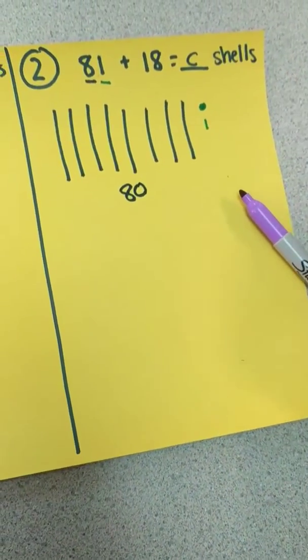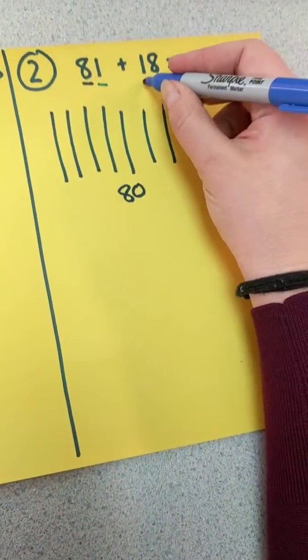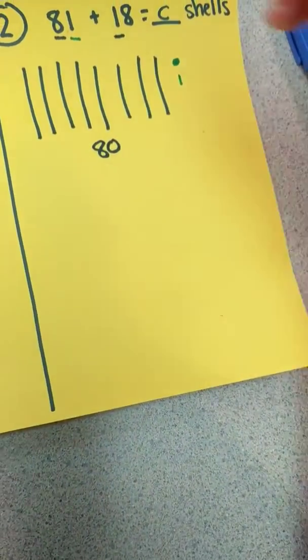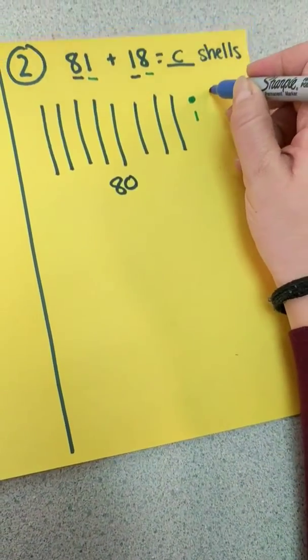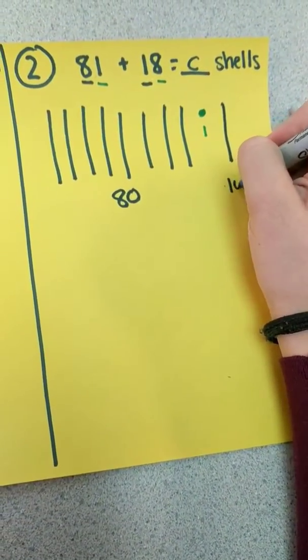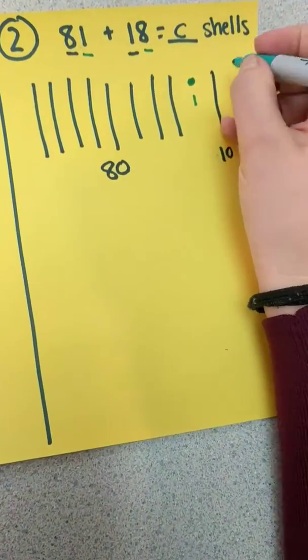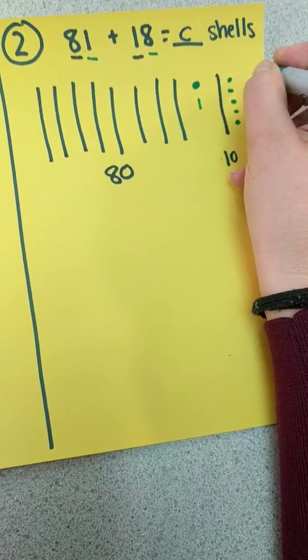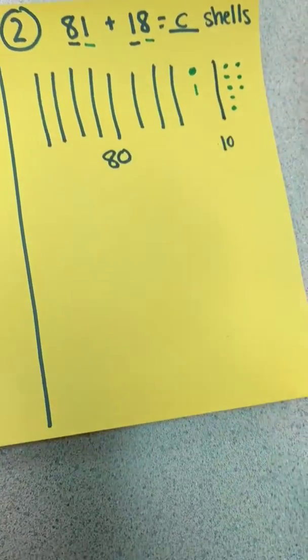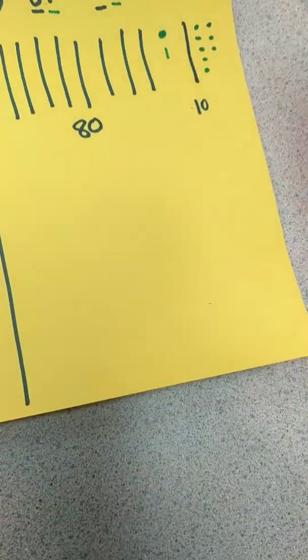And then I have one ten and eight ones. So I'll draw my one ten and label it. I'll draw my eight ones, two, three, four, five, six, seven, eight. Now label.